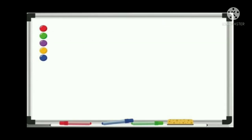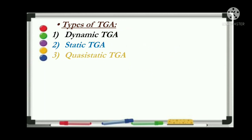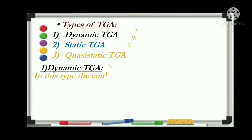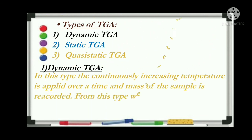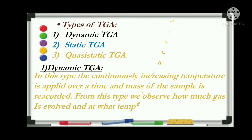Now let's see the classification or types of thermogravimetric analysis. TGA is classified into three types: first is dynamic TGA, second is static TGA, and third is quasi-static TGA. In dynamic TGA, the name itself indicates that we apply temperature to a sample in increasing order, and as the temperature increases, the change in mass of the sample is recorded. From this method we can determine how much gas is evolved from the solid and at what temperature the gas is evolved.